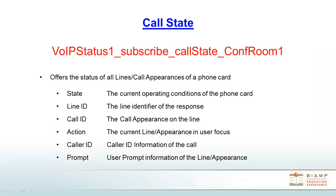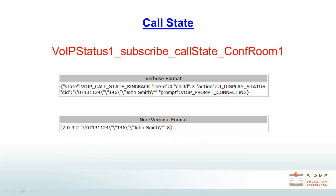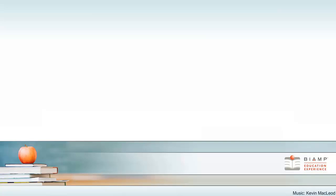One useful feature of subscriptions is the ability to subscribe to the status of all telephone lines and call appearances within a Tessera system. Below is a list of all of the attributes that you can receive from the subscription. Here are a couple examples of responses you would receive from an incoming phone call.